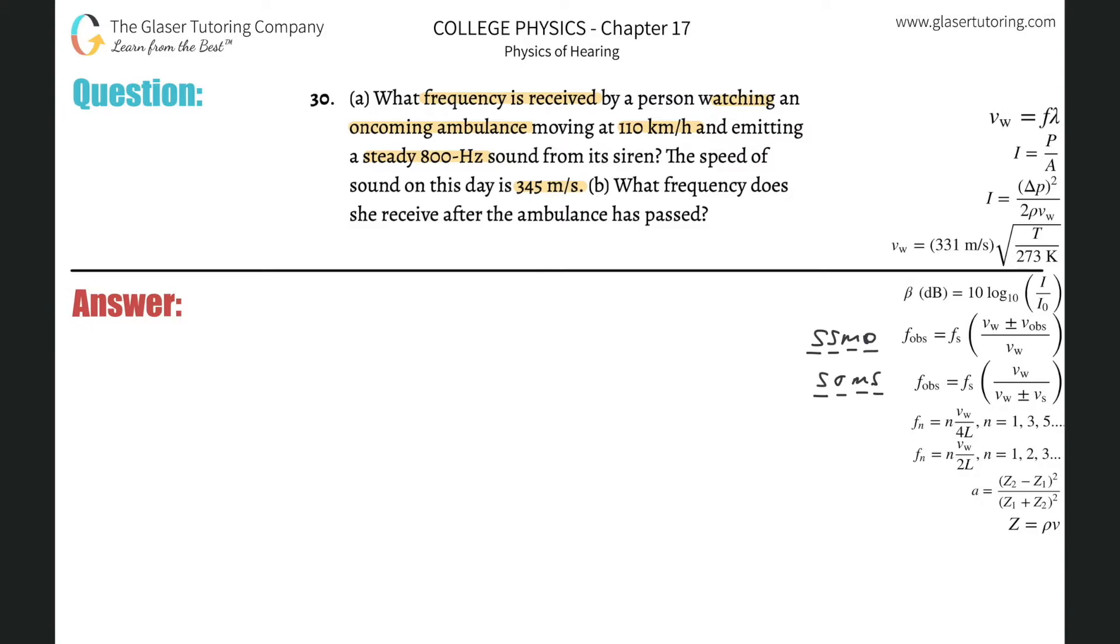So here we go. In this particular case, we have to think about what's happening, what's moving, what's staying stationary. It says an oncoming ambulance and it gives us a velocity. And it says the person is watching the ambulance. So I would assume that they're stationary. So we're dealing with stationary observer, moving source, SOMS. And for SOMS, the signs go on the bum bums. So let's write out that formula. So we're going to be using this formula.